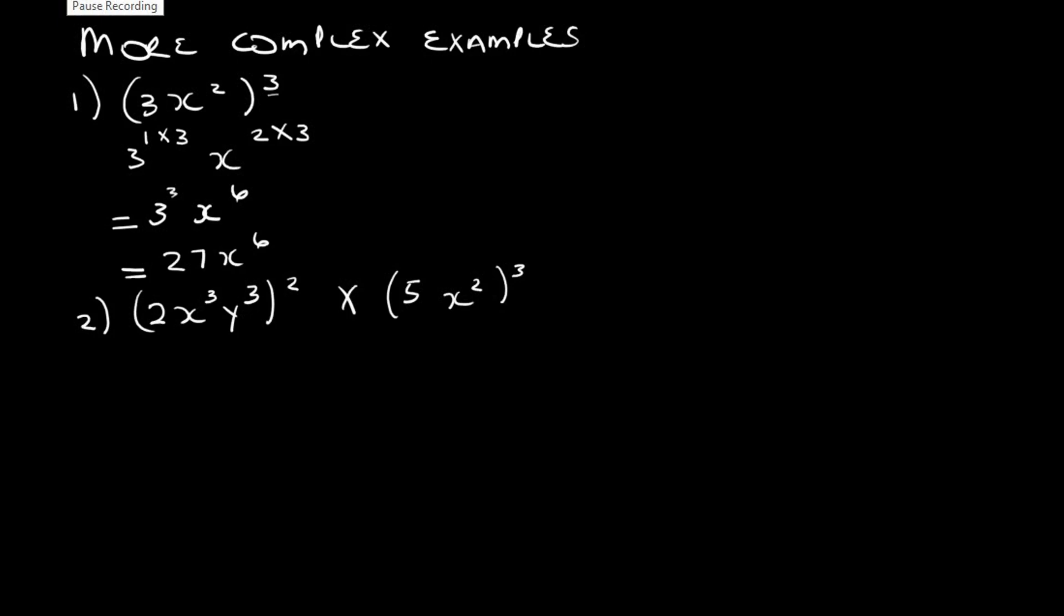Let's look at the following sum: 2x cubed y cubed to the power 2 times 5x squared to the power 3. So what we need to do is distribute this 2 into the bracket, and we need to distribute that 3 into the bracket.